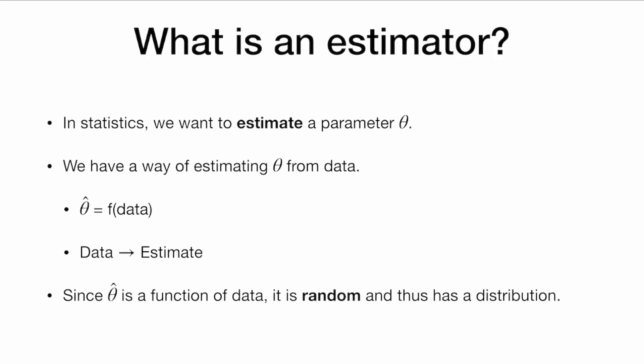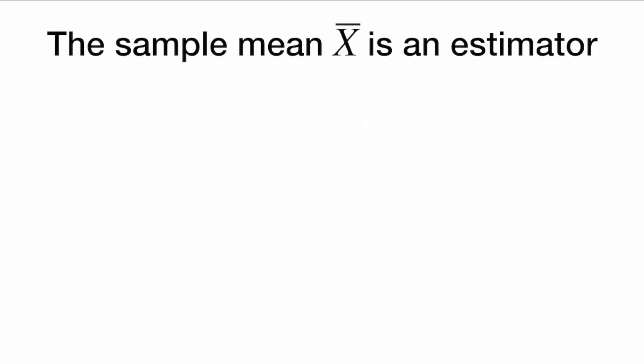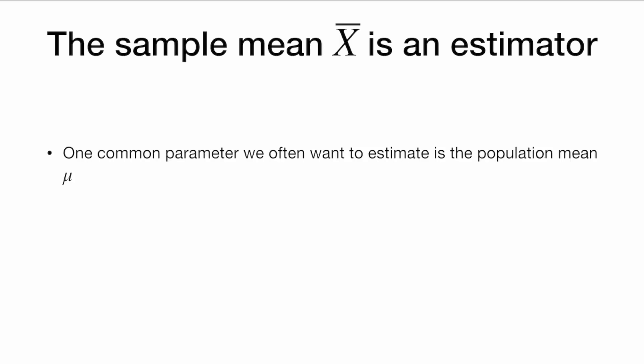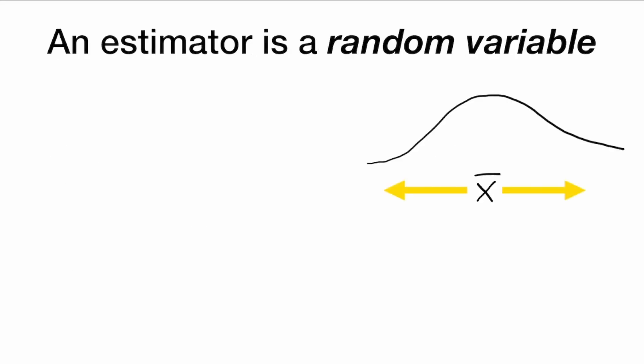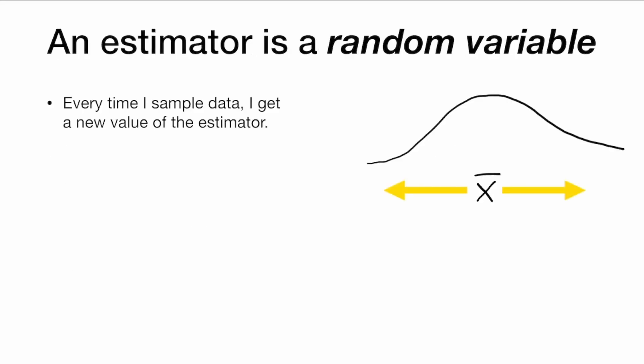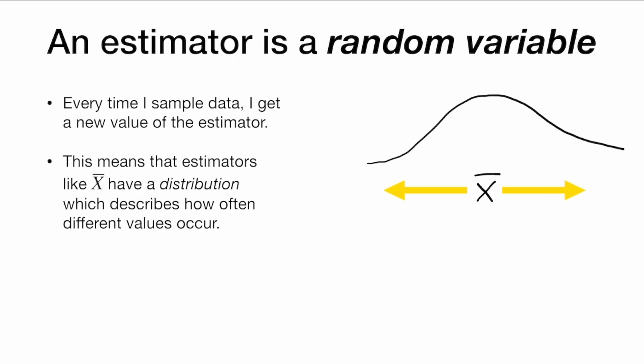Every time we get new data, we will get a different value of the estimate. For example, the sample mean x-bar is an estimator. One common parameter we often want to estimate is the population mean mu, and we estimate it with the sample mean x-bar. So we say that x-bar is an estimator of mu. An estimator is a random variable — every time I sample data, I get a new value of the estimator. And this means that estimators like x-bar have a distribution, which describes how often different values occur.